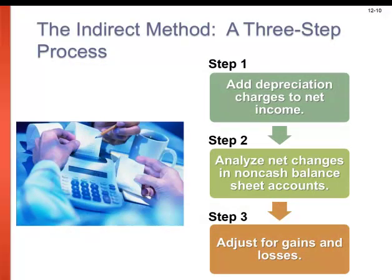We're going to focus on the indirect method to compute the statement of cash flows since it is required by GAAP. The direct method would give us the exact same dollar amounts for cash provided by operating, investing, and financing activities, but we're just going to focus on the indirect method. Essentially, we start with net income from the income statement, and the first thing we do is add back depreciation — we want to add that depreciation that was taken out of our income back in so we can reconcile it to cash.